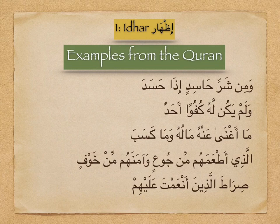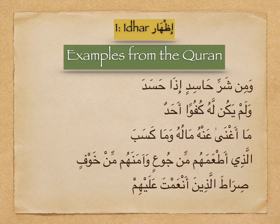With examples it will be easy, insha'Allah. In 'Wa min sharri haasidin idhaa hasad' — we have Tanween Kesra at the end of 'Haasidin', then the next letter is Hamza, which is from the letters of Al-Izhaar, so we do Izhaar: recite the Tanween with no delay, no Ghunna, no nasal sound, no stress — just keep going. Also in 'Wa lam yakullahu kufuwan ahad' — Tanween Fathah with Hamza. And in 'Maa aghna anhu maaluhu' — we have Noon Sakin followed by the letter Ha, so it is Izhaar.